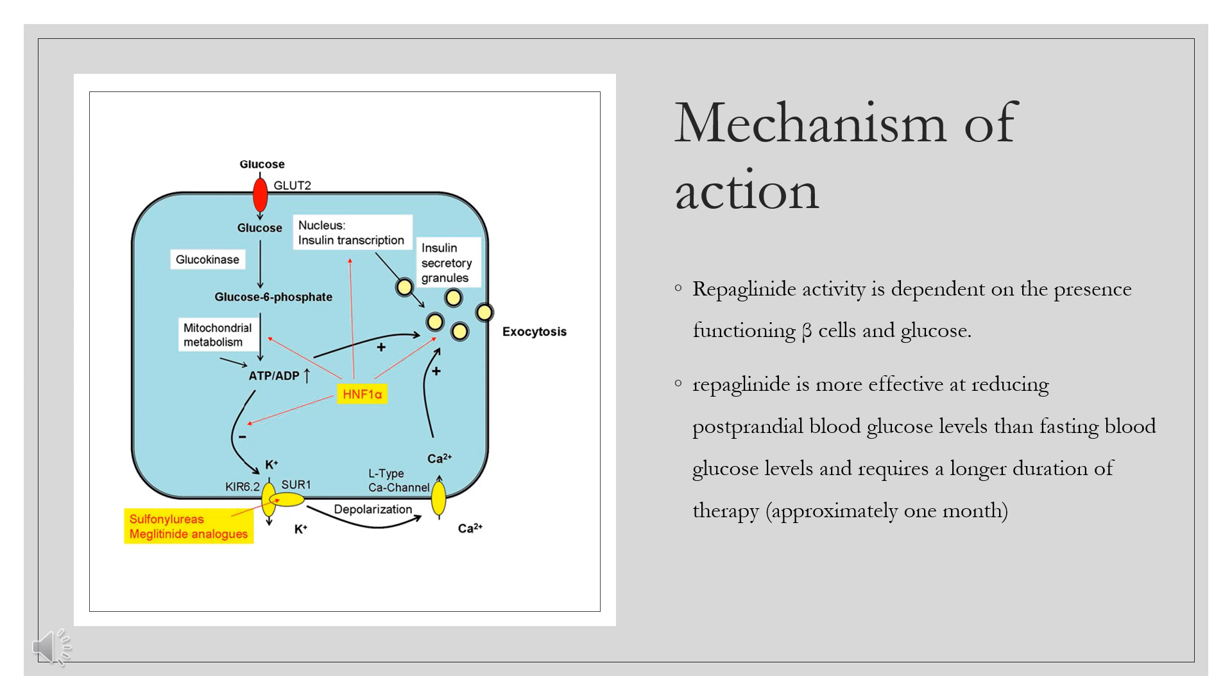As such, repaglinide is more effective at reducing postprandial blood glucose levels than fasting blood glucose levels and requires a longer duration of therapy, approximately one month, before decreases in fasting blood glucose are observed. The insulinotropic effects of repaglinide are highest at intermediate glucose levels, 3 to 10 mmol per liter, and it does not increase insulin release already stimulated by high glucose concentrations greater than 15 mmol per liter.